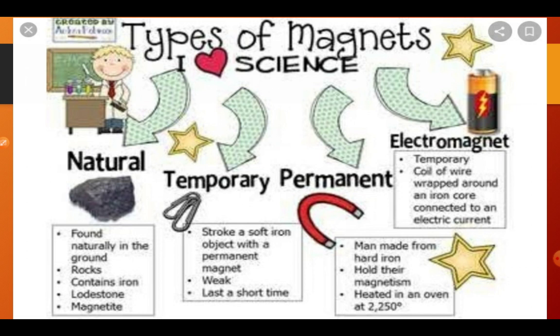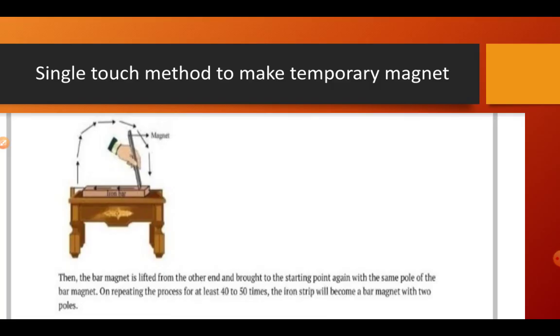The types of magnet: the naturally occurring form of magnet is called a natural magnet, also called loadstone or magnetite, and it contains iron. With the advancement of technology we are also able to develop artificial magnets, also called man-made magnets. One method to develop an artificial magnet is the single touch method. Man-made magnets are available in different shapes, and about electromagnets you will study in class seventh.